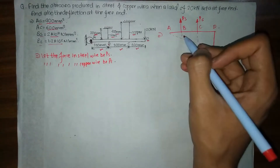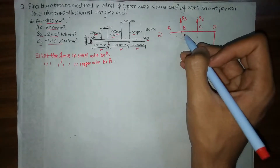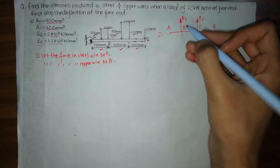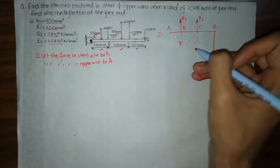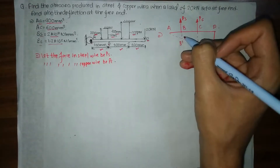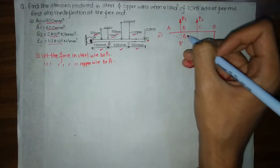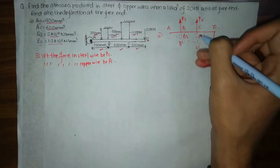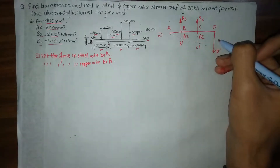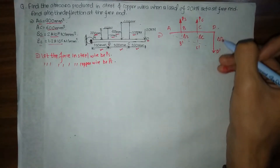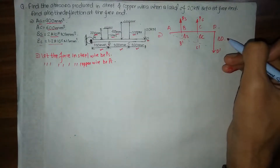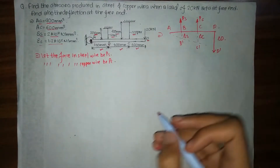The deflection produced in the steel bar will be denoted as B dash, and we define ΔL_S and ΔL_C as the deflections of the steel and copper wires respectively. ΔL_D is the deflection produced at the free end.